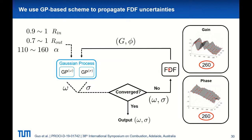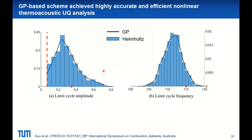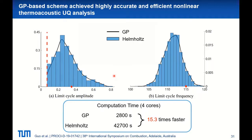Now let's use the proposed scheme to do uncertainty quantification. We have 260 uncertain data points in FDF gain and 260 in FDF phase, plus R_in, R_out, and alpha — three uncertain acoustic parameters. In total, this is a 523-dimensional UQ problem. For each sample or realization of FDF, R_in, R_out, and alpha, we perform the full iteration loop 10 times since we have 10 amplitude levels to predict the limit cycle frequency and amplitude. In total, we use 20,000 samples to perform Monte Carlo. The results show very good match between the two methods, and a 15 times acceleration is achieved.